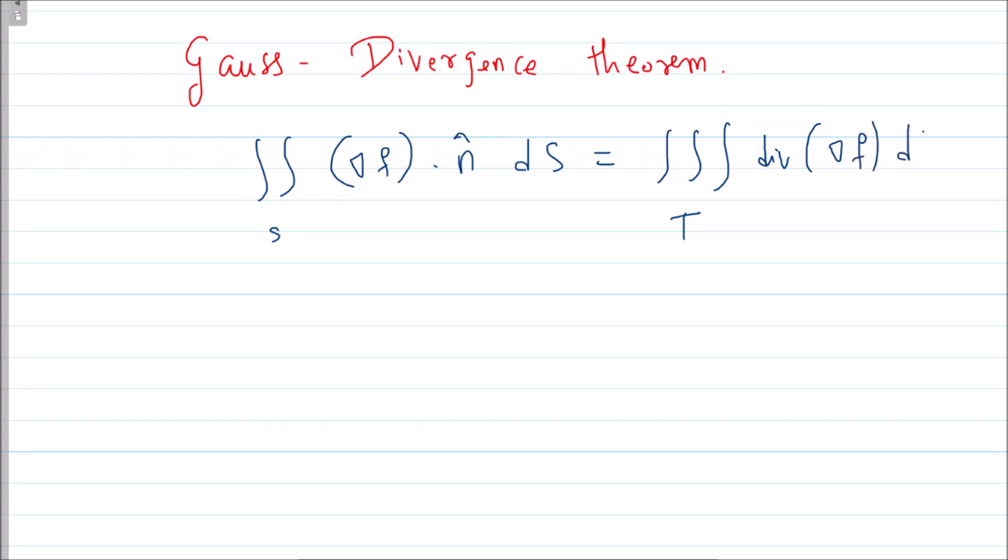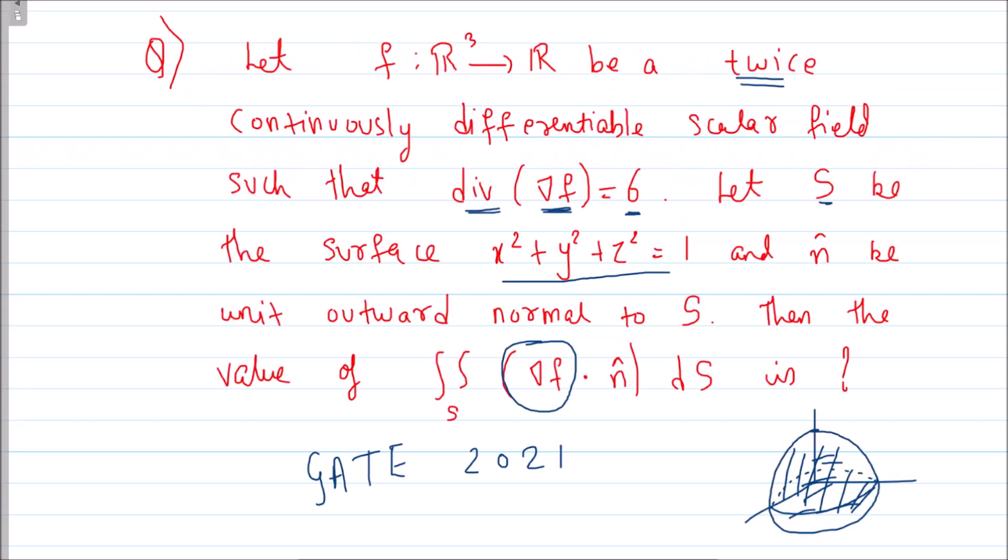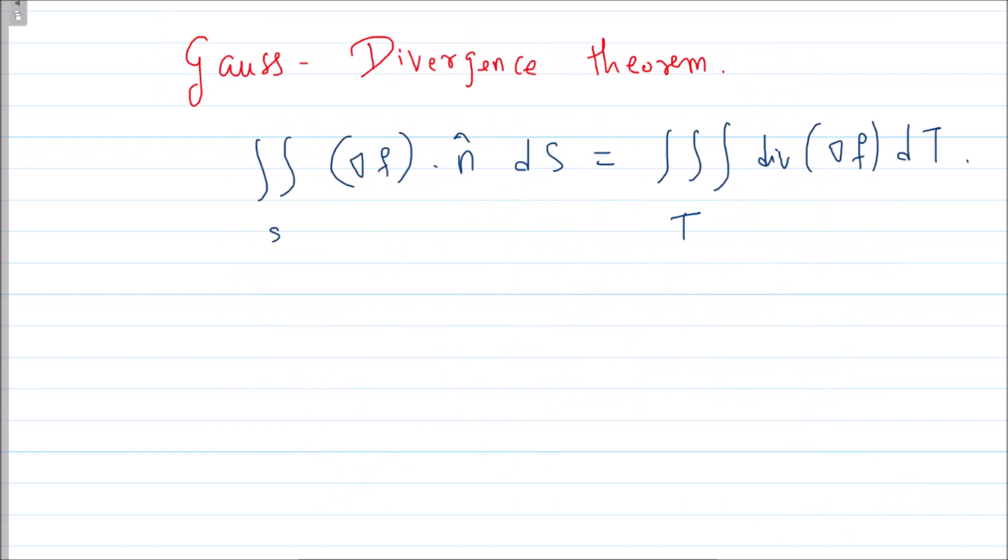So this is the theorem. Now here your S is a sphere, the region that it encloses is a solid ball, which is closed and bounded. The surface of the sphere is a smooth surface, differentiable, right? This is a differentiable function, so good, you can apply this theorem.